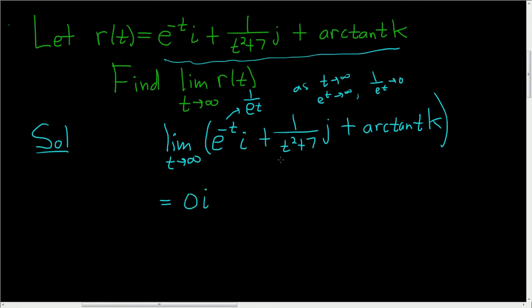Likewise here, this term is going to approach 0, because t approaches infinity, and it's being divided by t squared plus 7. So this is plus 0j.